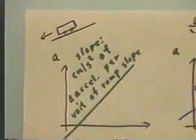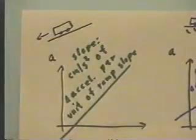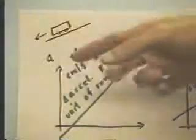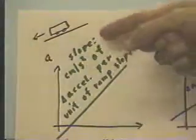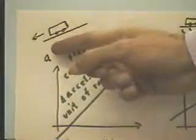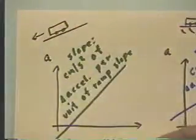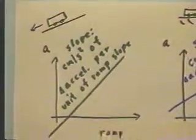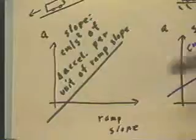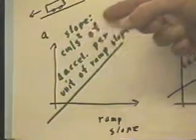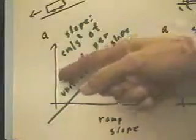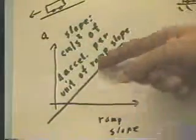And of course, we have already observed for a cart coasting freely down a ramp, how we get a graph of acceleration versus ramp slope. And the slope of this graph tells us how many centimeters per second squared of acceleration change, delta acceleration, per unit of ramp slope.